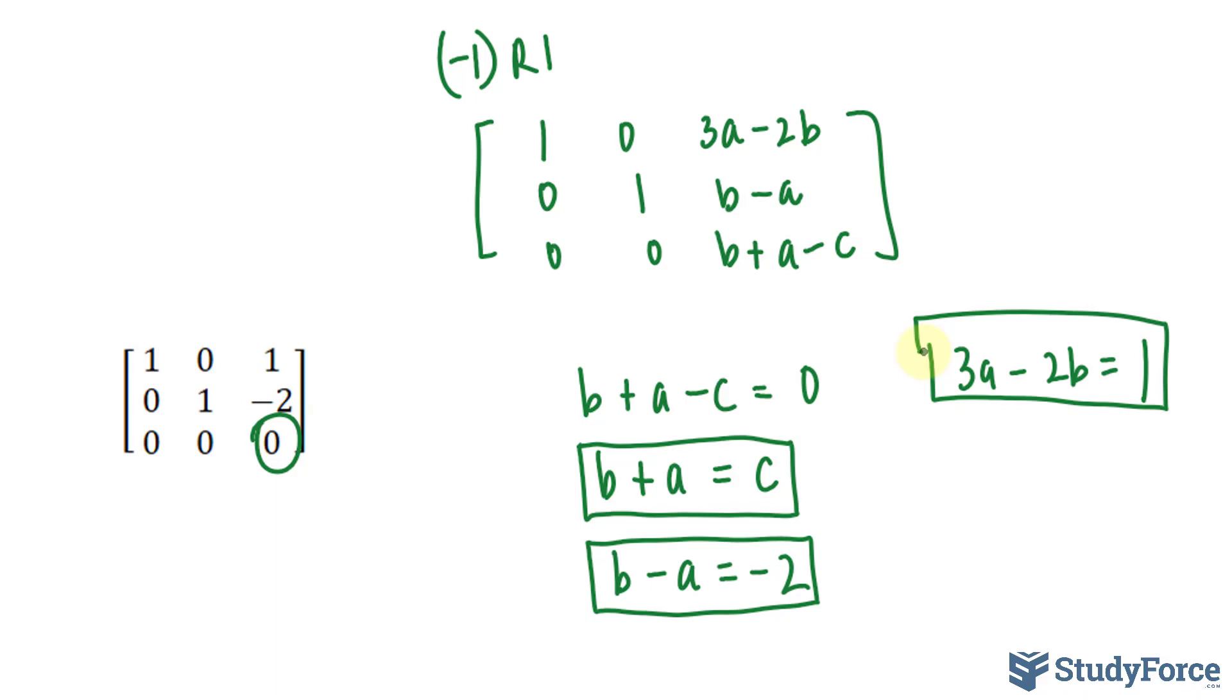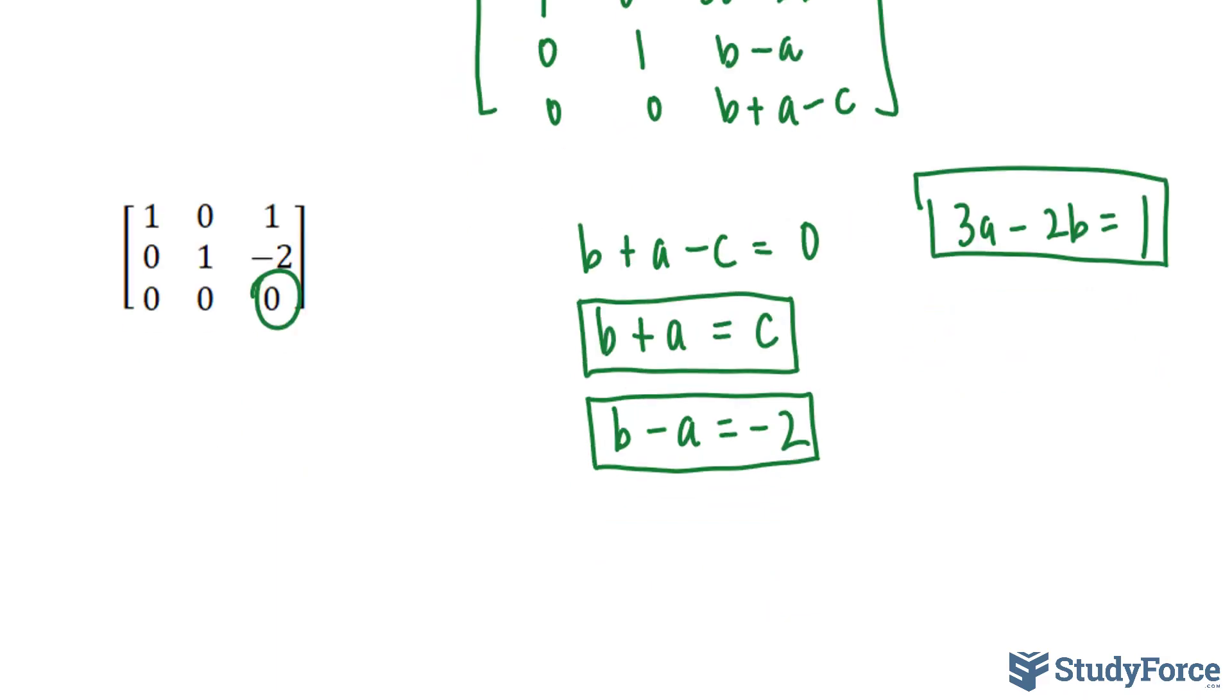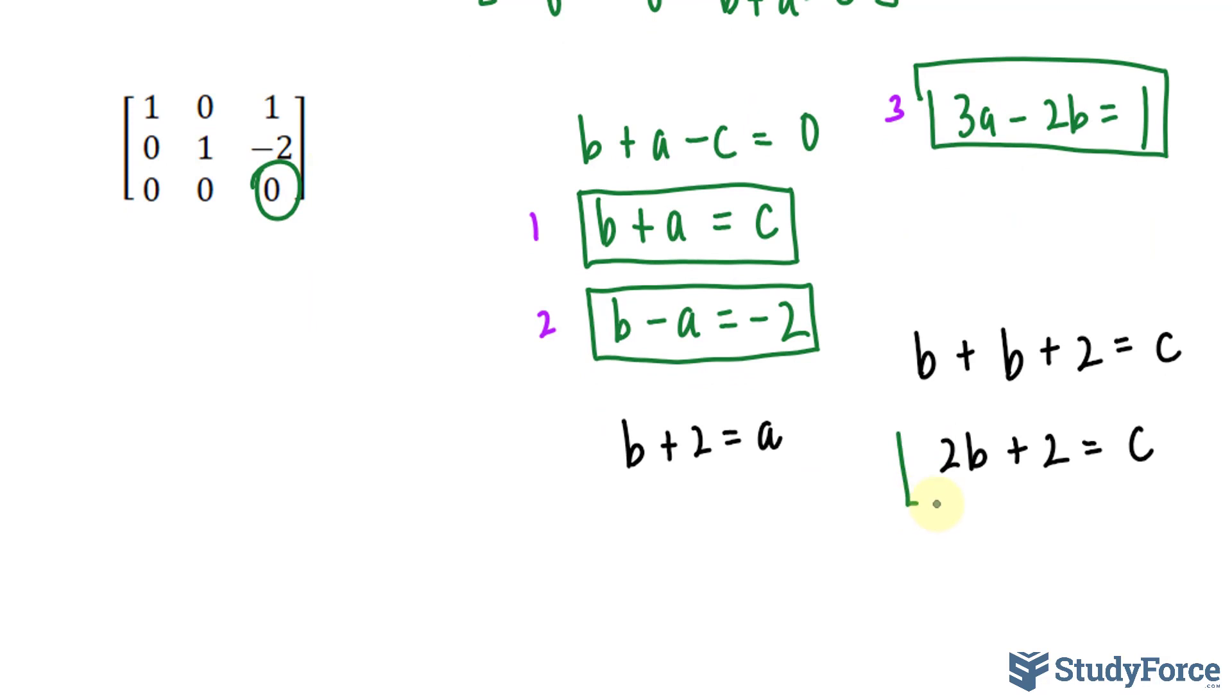Now we have to solve another system of equations with three unknowns. You can do this by hand or you can use your calculator. Let me show you how to do it by hand. I'll solve for A in this equation. So I'll call this 1, 2, and 3. Solving for A in this equation gives us B plus 2 is equal to A. I'll substitute that now into equation number 1. So I'm doing this a little bit informally, but you can follow along easily because these are simple equations. B plus B plus 2 is equal to C, which gives us 2B plus 2 is equal to C. I'll box this in because it is important.